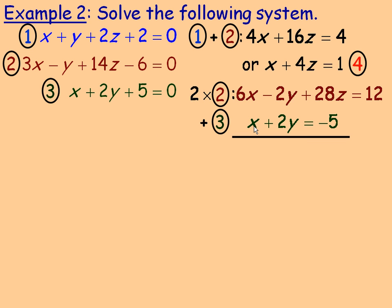So 6x and 1x is 7x. 28z and there's no z here to add. The 2y and negative 2y add to 0, and 12 minus 5 is 7. Notice that's all divisible by 7, so if we divide by 7 we get x plus 4z equals 1. Notice that this is exactly the same equation we got before. So we took two different pairs and eliminated y both times and got exactly the same equation. What that means is that these three planes intersect in a line.